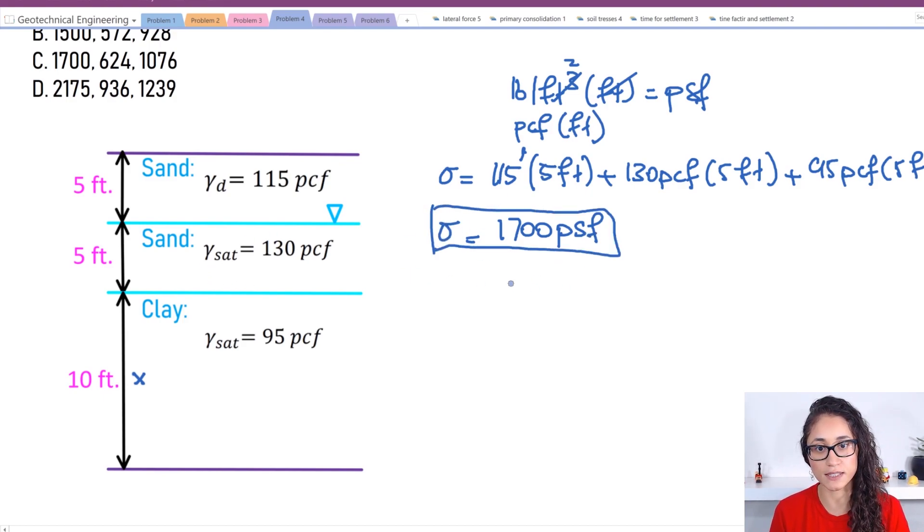Now if we look at the water pressure, like we said earlier, if we don't have water, there's no pore pressure. So that would be just zero. Here, our pore pressure is going to be zero. Now the pore pressure starts where the water table starts. So I have unit weight for water, which is 62.4 pounds per cubic feet. If you're using SI units, make sure you use 9.81 for the unit weight of water. This equals 624 PSF.